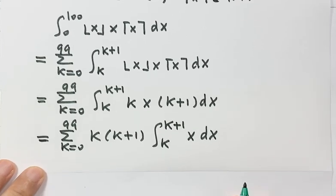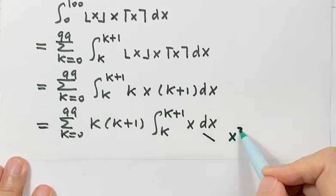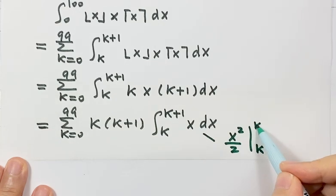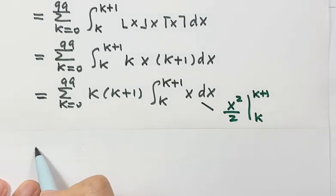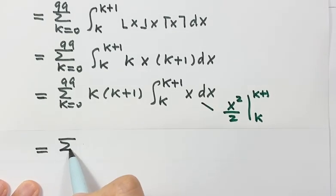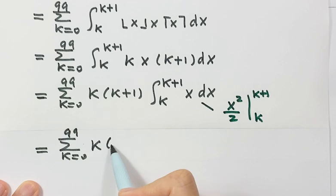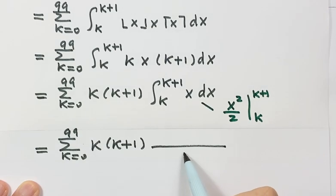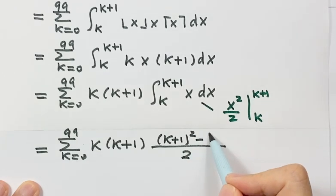The only thing left inside is just x. For this integral that's pretty simple — just x squared over 2, evaluated from k to k+1. This gives us the sum from 0 to 99 of k(k+1) times one-half times [(k+1)² − k²].